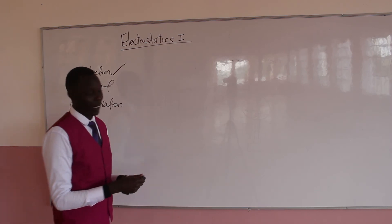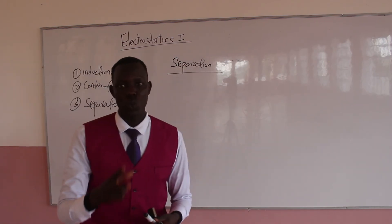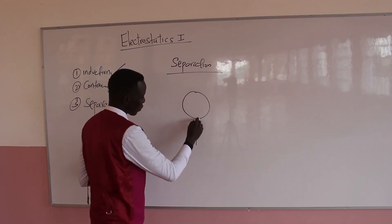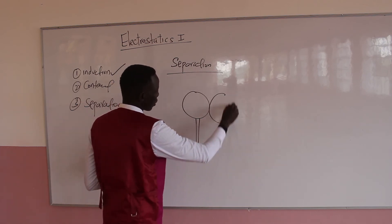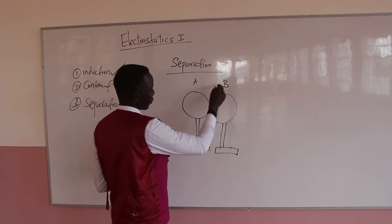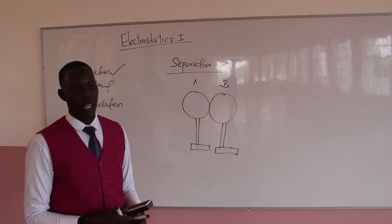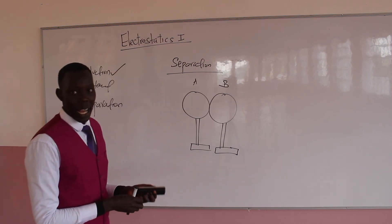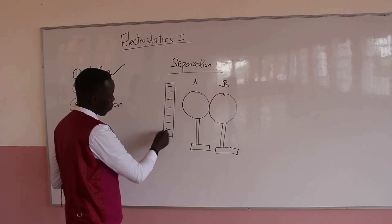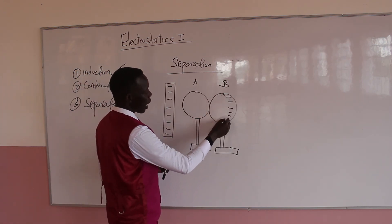Charging by separation is very simple. By separation, we can charge two polystyrene boards — or any two objects — at the same time. I will have object A in contact with object B. So now they are in contact together; it's like A and B are one material. When a charged rod is brought close to it — without touching — electrons are attracted to this part, while protons are left on the other side.